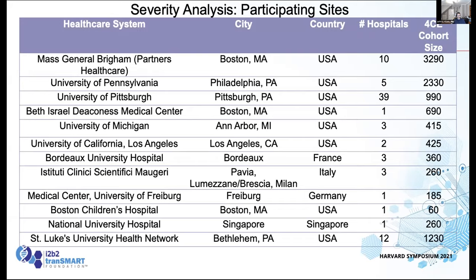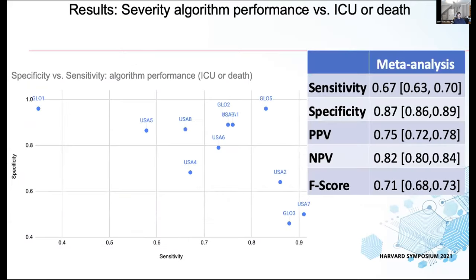We had 12 sites participate. As you can see in the hospital column, a lot more than 12 hospitals participated — many, many patients. The 4CE cohort number represents all patients who were COVID positive and admitted to the hospital. These are our main results.